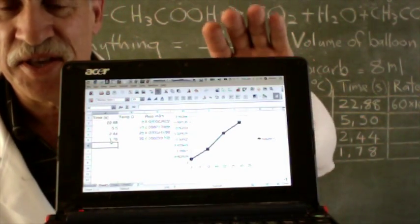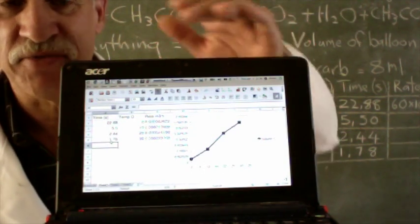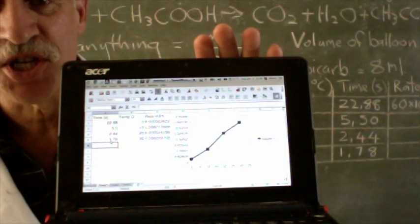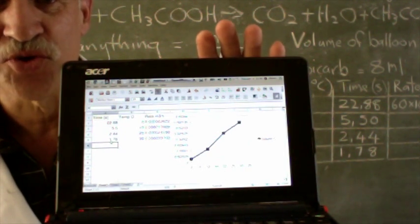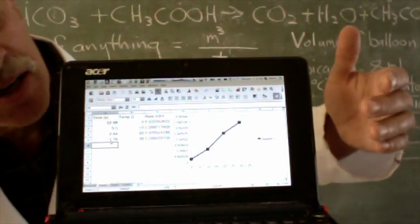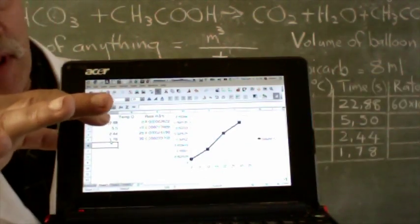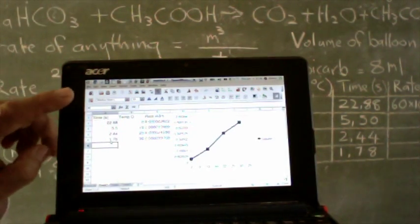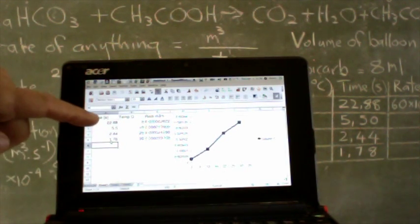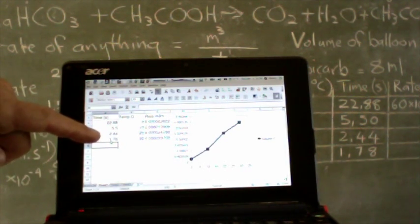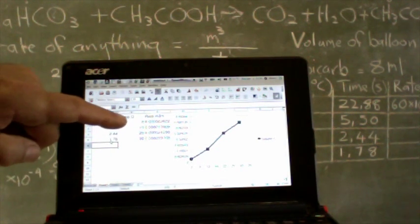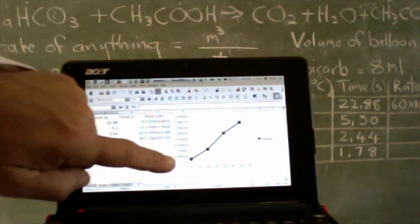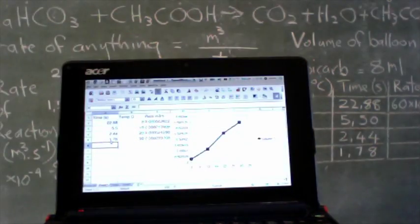Now, in conclusion, because physics can always be fun, we have used our Acer Notebook and an Excel type of spreadsheet program to draw our graph for us. What we've done is we've put the time here: 22.5, 2.4, 1.78. We've put the temperature: 0, 10, 20, 30 here. Excel works out the rate of the reaction and then it draws us a graph very easily.